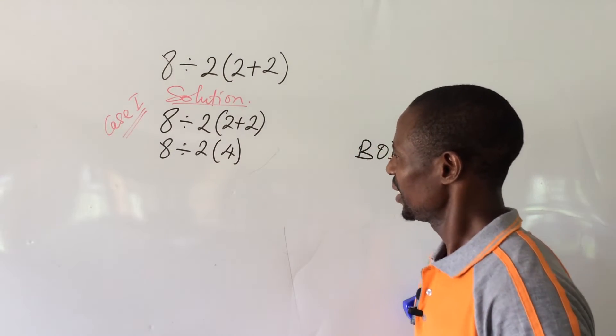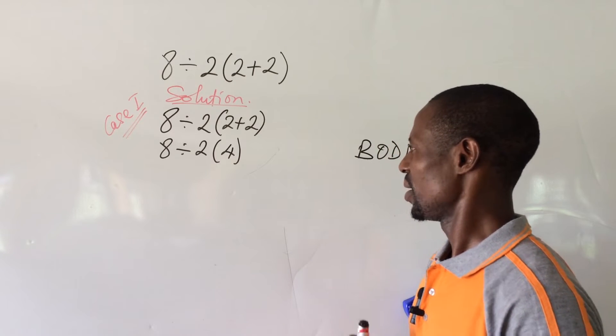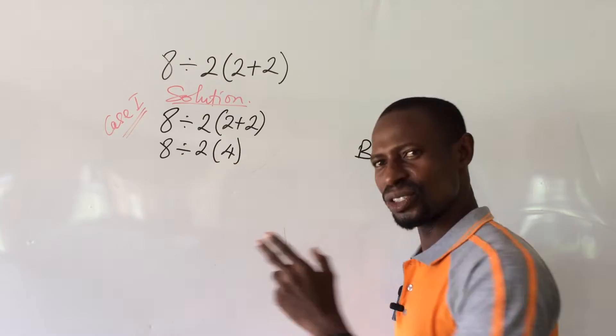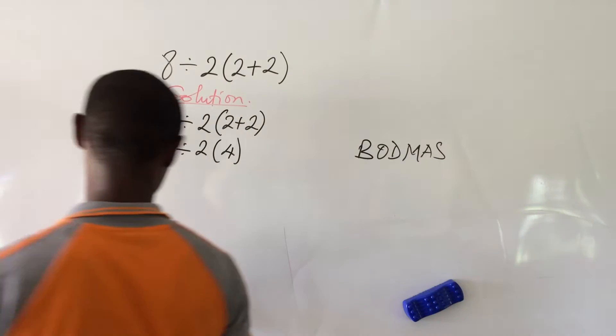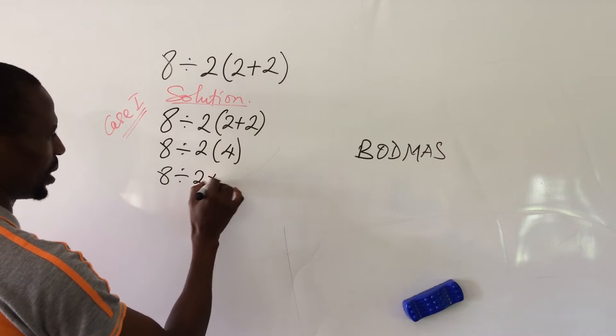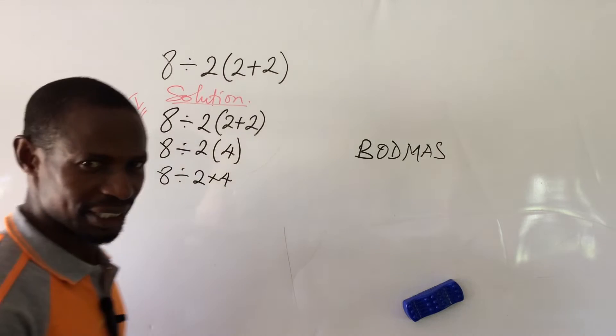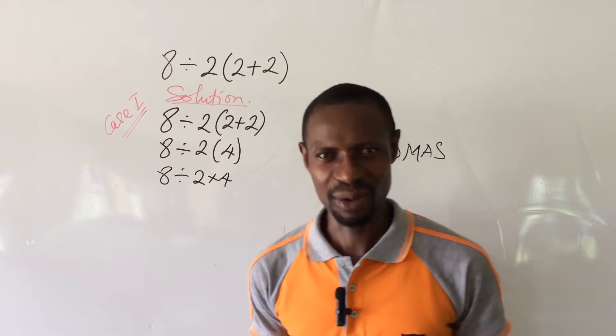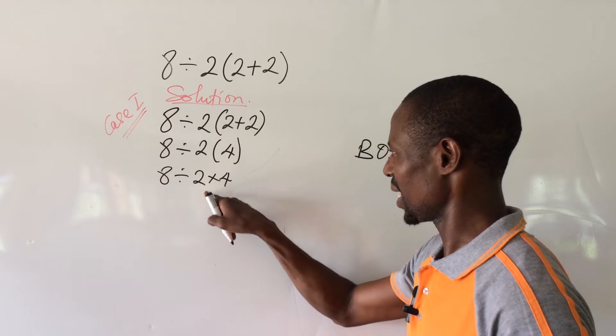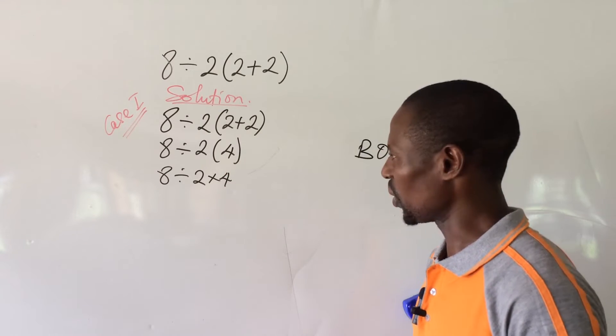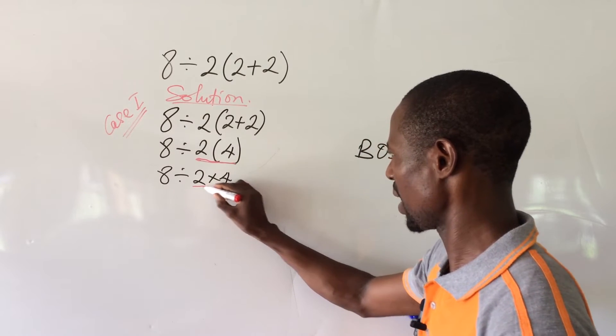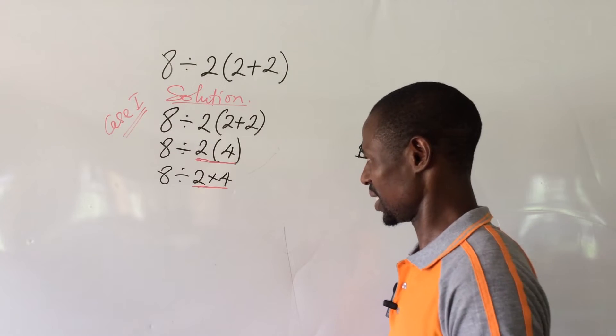Now if we look at this carefully, these 2 into 4 can also be written as 8 divided by 2 times 4. If we go by this, I will stay in order by removing this bracket sign and introducing a multiplication sign. Because this expression we have here now is the same thing we have here now. It has not changed the system.